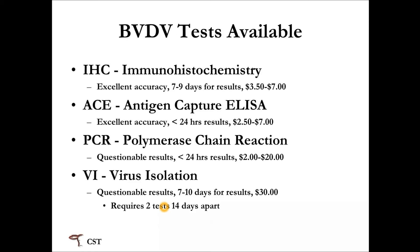There are several tests available for BVD. Immunohistochemistry, or IHC, has excellent accuracy but takes about seven to nine days for results, costing roughly $3.50 to $7. The antigen capture ELISA, or ACE test, also has excellent accuracy, delivers results in less than 24 hours, and costs about $2.50 to $7. PCR, or polymerase chain reaction, is the newest methodology — results in less than 24 hours and variable cost between $2 and $20, but its results can be questionable. Virus isolation, the oldest test, also has questionable results, takes seven to ten days, is expensive, and requires two tests about 14 days apart to verify PI status.